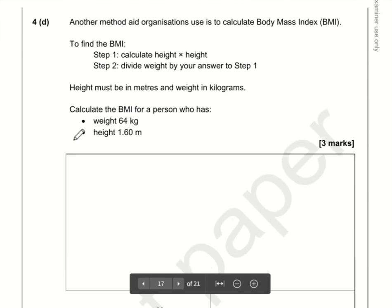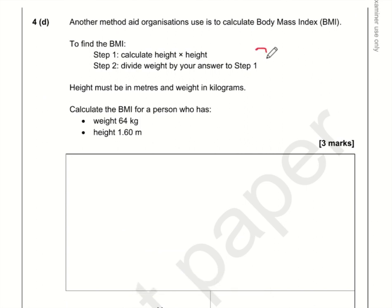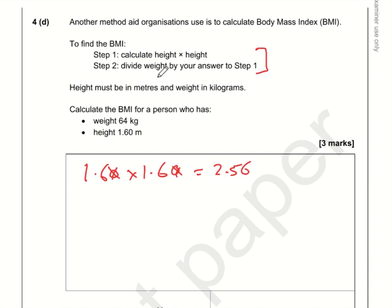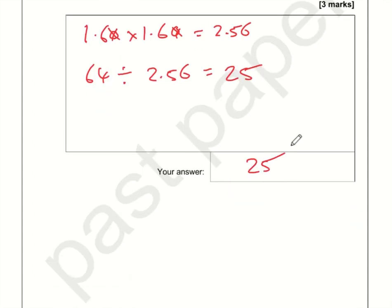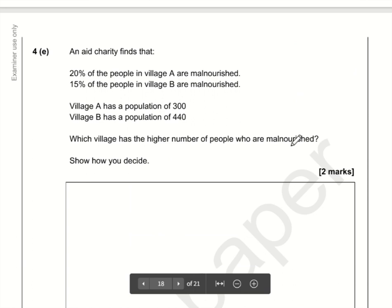For part d, follow the steps: first calculate height times height — 1.60 times 1.60 equals 2.56. Step two: divide weight, which is 64, by the answer to step one. 64 divided by 2.56 gives a BMI of 25.